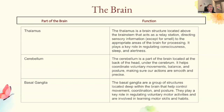The thalamus is a brain structure located above the brainstem that acts as a relay station directing sensory information — except for smell — to the appropriate areas of the brain for processing. It plays a key role in regulating consciousness, sleep, and alertness. The cerebellum is located at the back of the head and helps coordinate voluntary movements, balance, and posture, making sure actions are smooth and precise. The basal ganglia are a group of structures deep within the brain that help control movement, coordination, and posture, and are involved in learning motor skills and habits.